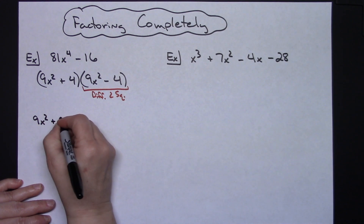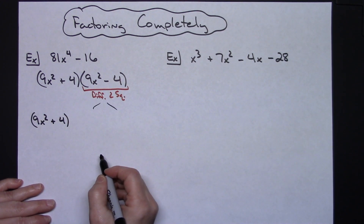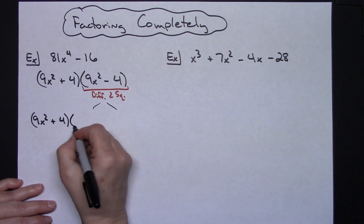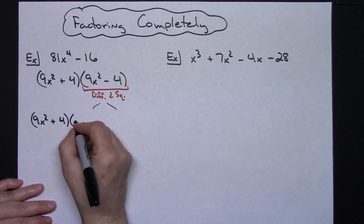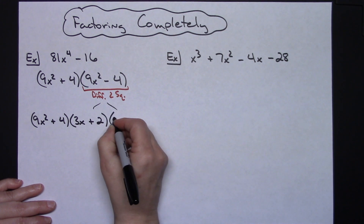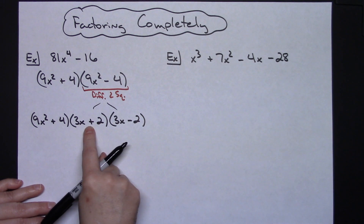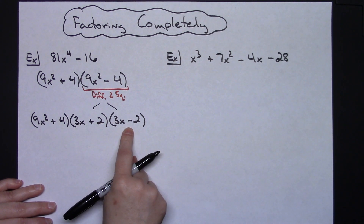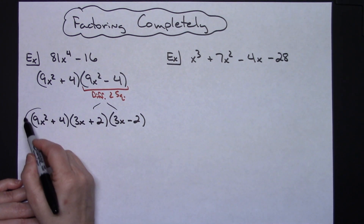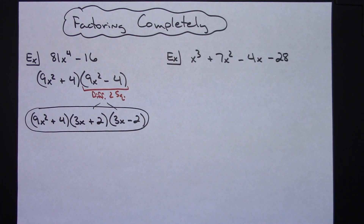The second factor (9x² - 4) splits into (3x + 2)(3x - 2). Checking each of these again to see if anything else can be factored — it cannot. So now I have factored this expression completely.